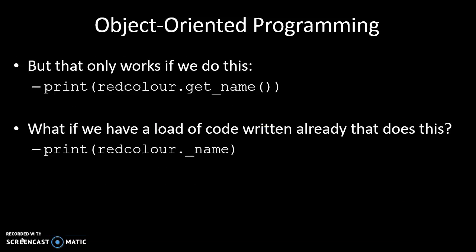That only works if we call it using get_name. If we print redColor.underscore_name, it will print out just blank. Now the problem is, if this code has been around for a while before I created the getters and setters, there might be a bunch of code that is printing out just redColor.underscore_name — so none of that code will print back the 'there is a blank' message. It'll just return blank. That can get confusing. So it would be great if there was a way to force the getter method to run anyway, even if somebody says print redColor.underscore_name.